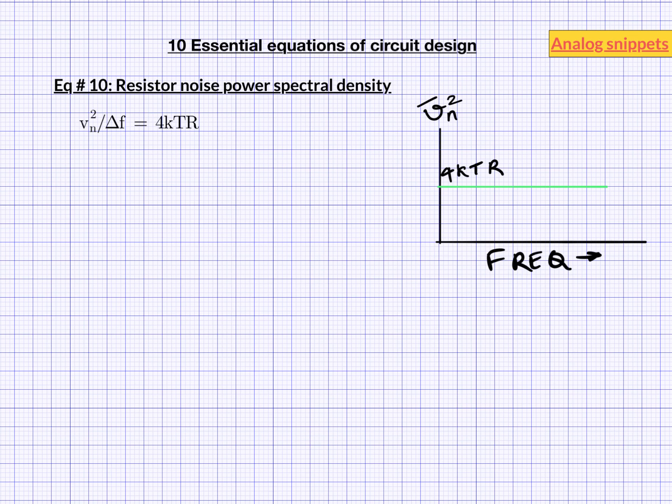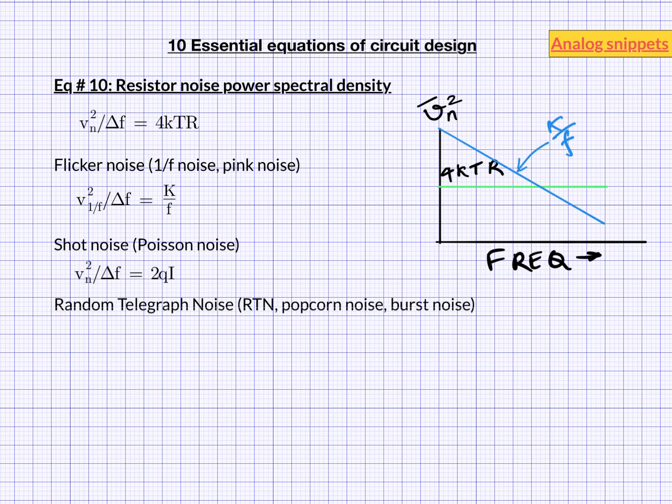Resistor thermal noise is by no means the only source of noise in circuits. Another important source of noise is flicker noise. It is also known as 1 over f noise or pink noise. In its most general form, its power spectral density is a constant over f where f is frequency. If you plot the flicker noise power spectral density with log frequency you will get a slanting line with minus 20 dB per decade slope. Other types of noise are shot noise and random telegraph noise. Shot noise is again white. And RTN is much more complicated but typically it has 1 over f square spectrum.